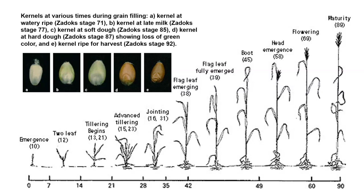Once you actually get maturity starting, then you're looking at grain stages. In this particular case, it took about 90 days to get to maturity. Watery ripe is going to be where you're getting emergence to flowering. These are on small grains.